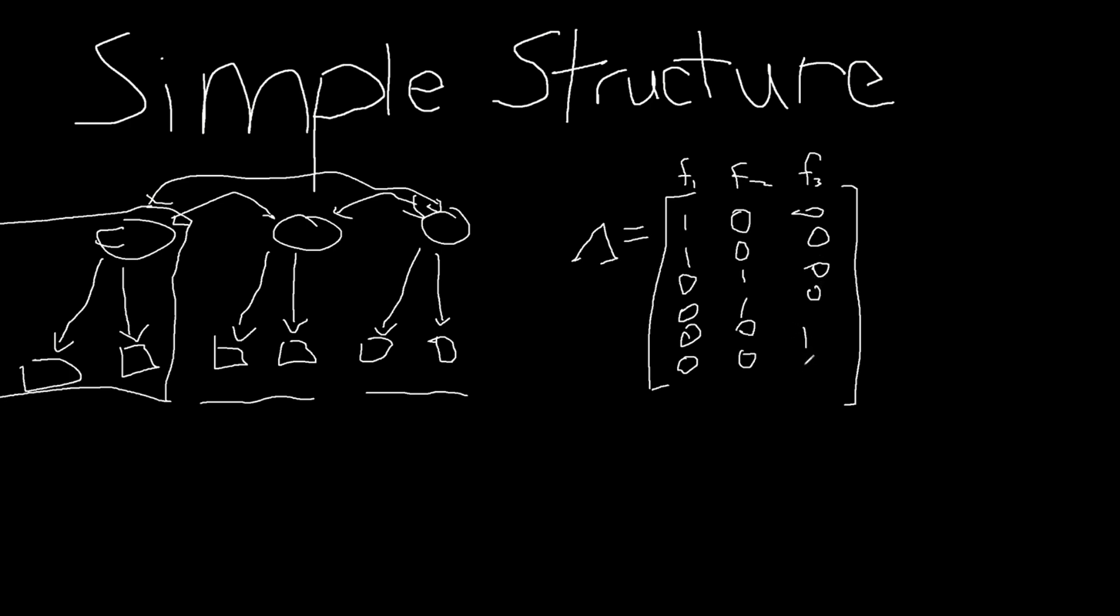It's the reverse. So simple structure as it's conceptualized today is that each item has a non-zero value in the column of the factor that it loads onto. And if there is a single non-zero value for each row, then we can say our factor structure is simple or relatively simple because there is only one factor per item.